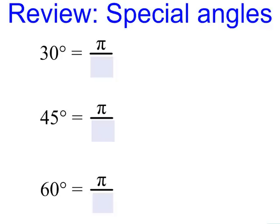From a previous video, we looked at our special acute angles: 30 degrees, 45 degrees, and 60 degrees, and we converted them to radians. You should know that 30 degrees is π over 6, 45 degrees is π over 4, and 60 degrees is π over 3.